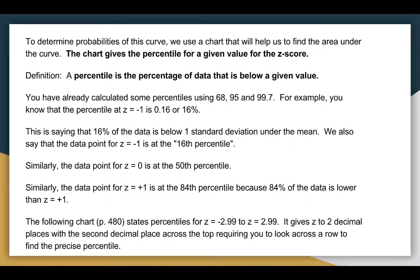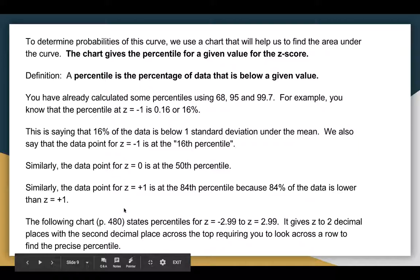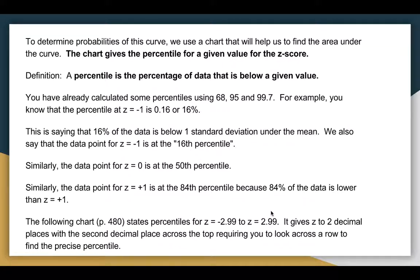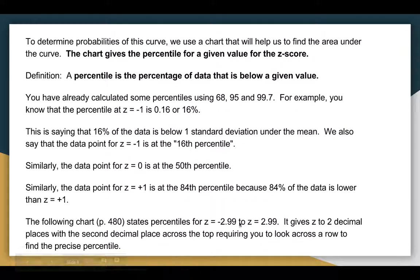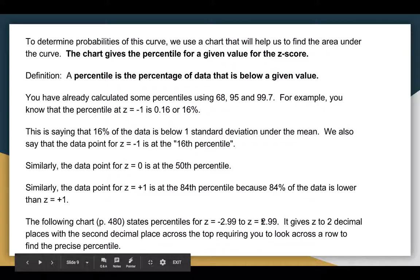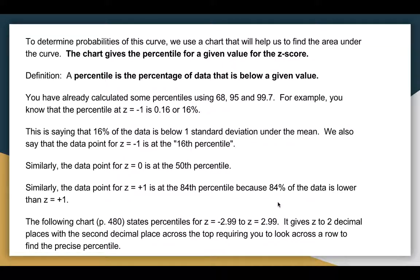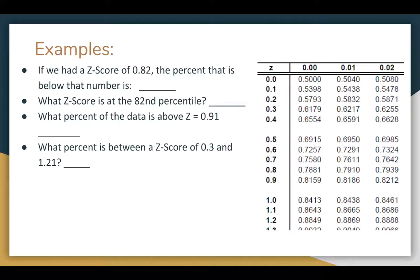And the chart, we're going to look at a piece of the chart, but it's found on page 480 in the textbook. But also a Google image search will get you the chart. It states percentile is between negative 2.99 and 2.99. Depending on what chart you have, it might go a little bit further. But these virtually get to 0 and virtually get to 1, 100%. It gives you two decimal places, a second decimal place across the top, and so we'll actually look at using it right now.